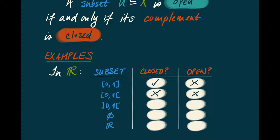Now let's look at the open interval (0,1). That turn of phrase must tell us that this thing is open — and yes, it is indeed open. There aren't any points of (0,1) that are close to the complement of (0,1). Is (0,1) closed? No, it's not closed, because there are points like 1 that are close to (0,1) but are not contained in it.